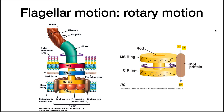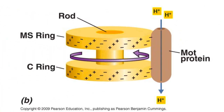Shown on the left is the arrangement of flagella in a gram-negative bacterium. Several protein rings anchor the flagella to the cytoplasmic and outer membranes. Flagella push or pull on a cell by rotating. This rotation is powered by the movement of protons through the mot protein. This causes the mot protein to spin, and it in turn spins the C and MS rings.